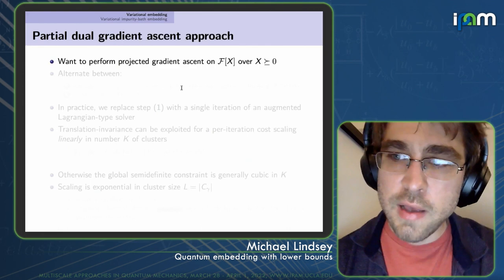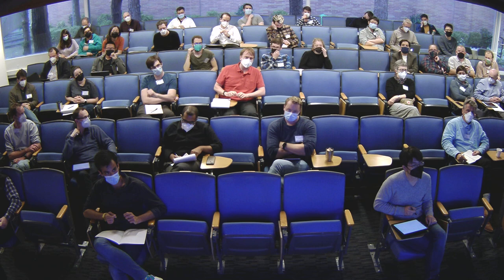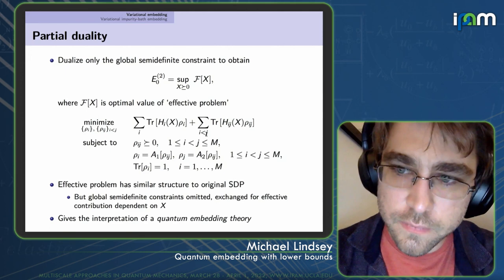Q: So you have h_i of X and h_{ij} of X — do you have explicit formulas for them from doing the duality? A: Yes, they depend linearly on X.